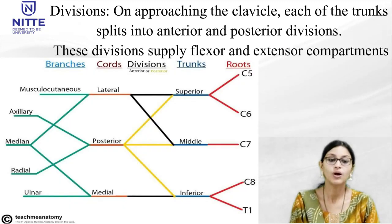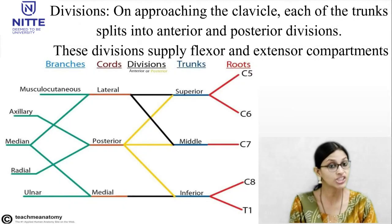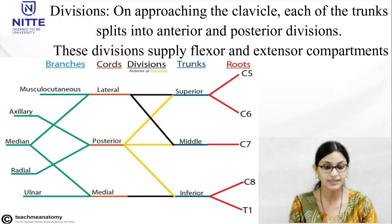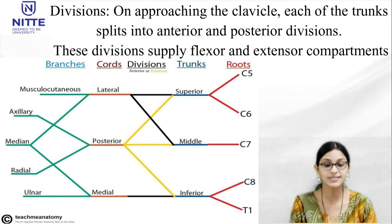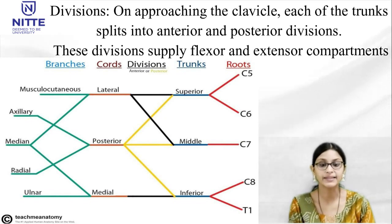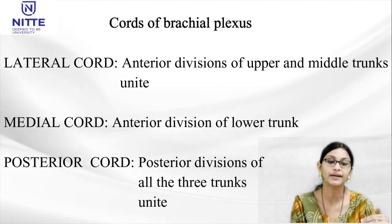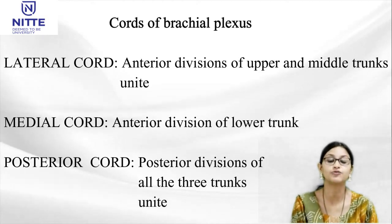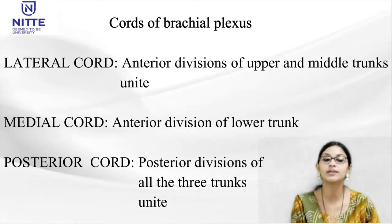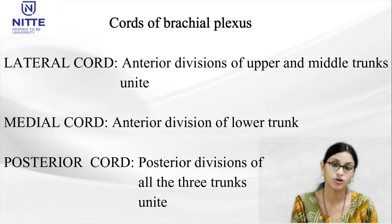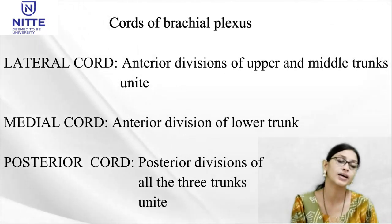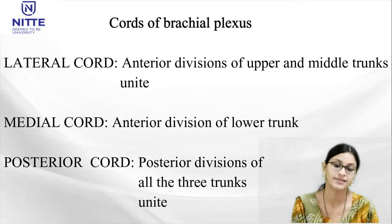Coming to the divisions: on approaching the clavicle, each trunk will split into two divisions — anterior and posterior divisions. These divisions supply the flexor and extensor compartments. The anterior divisions of upper and middle trunks unite together to form the lateral cord. The anterior division of lower trunk alone continues as the medial cord. The posterior divisions of all three trunks unite together to form the posterior cord of brachial plexus.